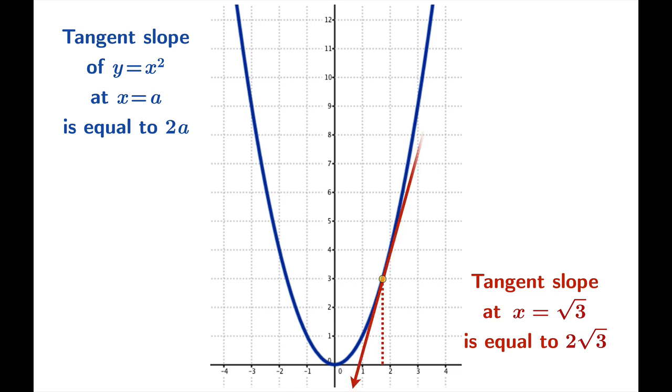Now let's do some calculations here. We notice that square root of 3 is about 1.7, so twice that is about 3.464. And you can see from the graph that these quantities all seem to square nicely. And it looks plausible that the tangent slope at square root of 3 is twice square root of 3.